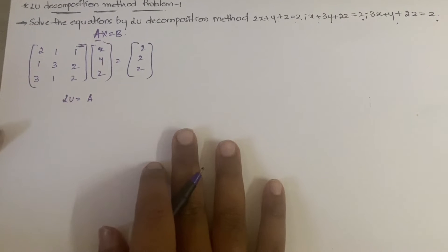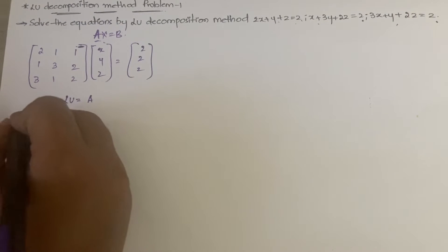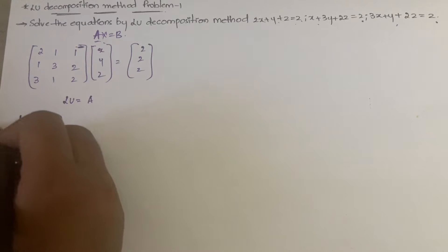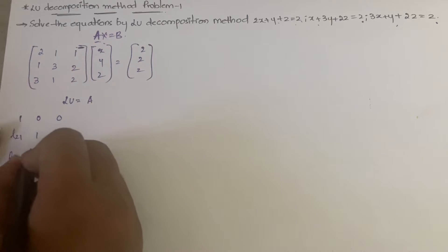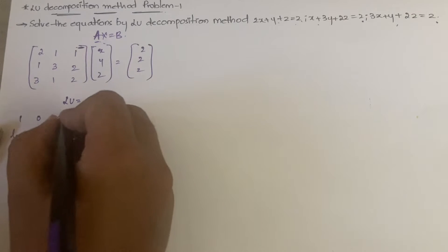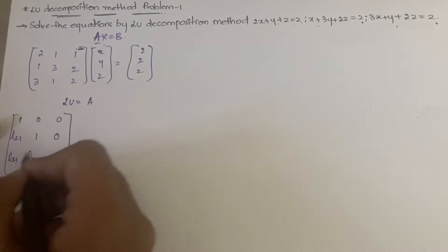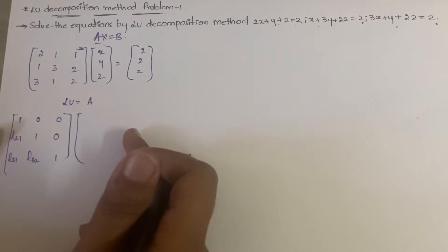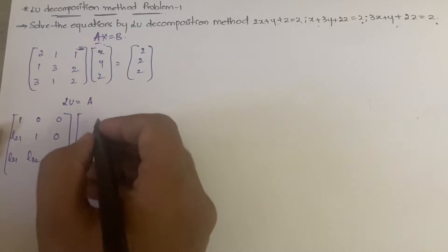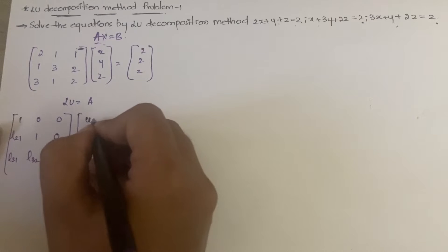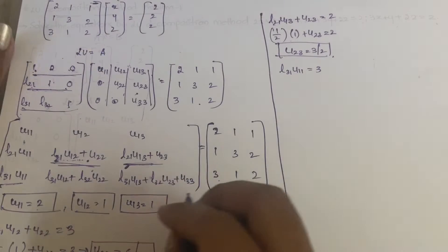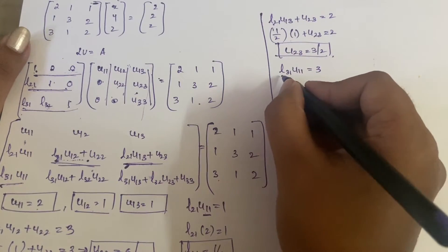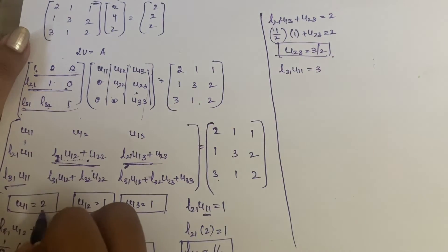L is written as: 1, 0, 0 / L21, 1, 0 / L31, L32, 1. U is the reverse: U11, U12, U13 / 0, U22, U23 / 0, 0, U33. You don't know the value of L31 yet, but you know U11 which is 2.